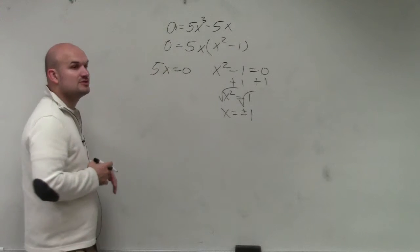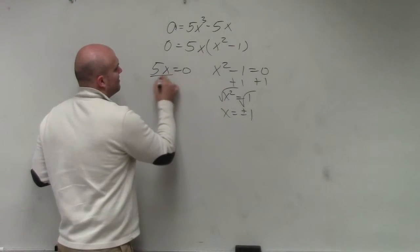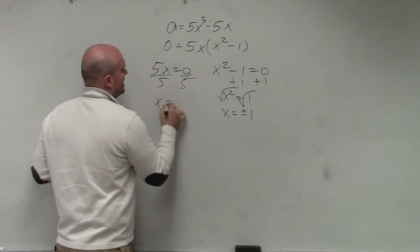Right? Remember when you introduce the square root, you have to include plus or minus. Here you divide by 5, divide by 5, x equals 0.